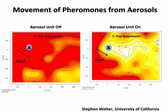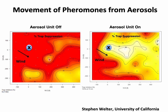Research by Stephen Welter at the University of California examined the movement of pheromones from aerosols. He placed an aerosol unit in a field and measured percent trap suppression downwind when the unit was off versus on. With the unit off, only 5–25% trap suppression was observed downwind. When the unit was turned on, trap suppression jumped to 75–95% downwind. This demonstrates that pheromone moves both longitudinally and laterally a great distance from the source of emission.